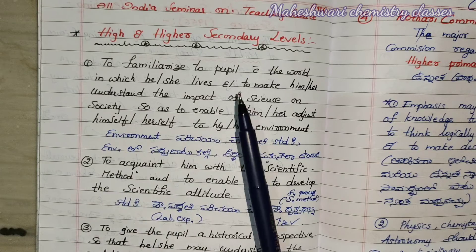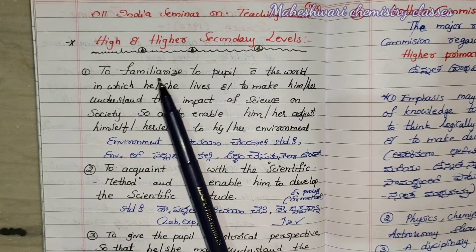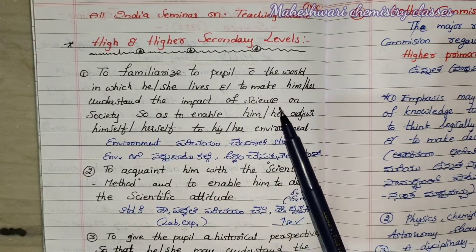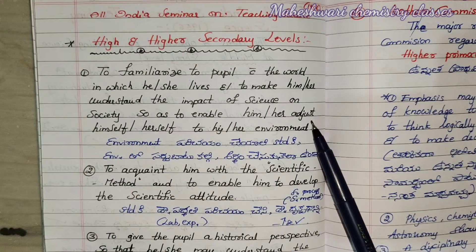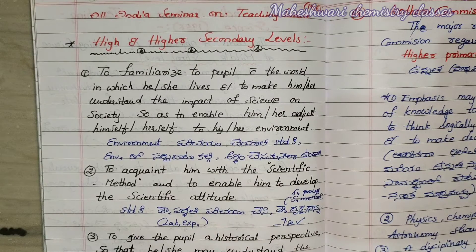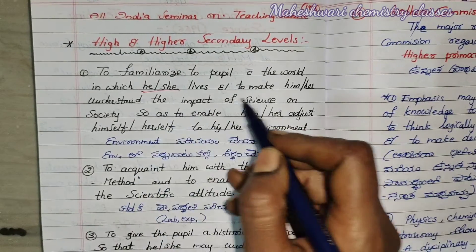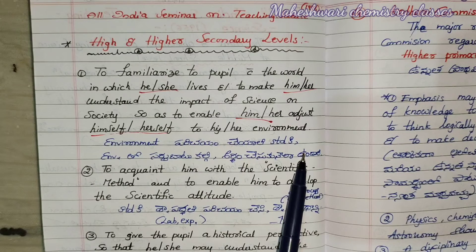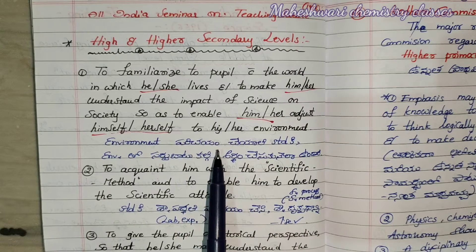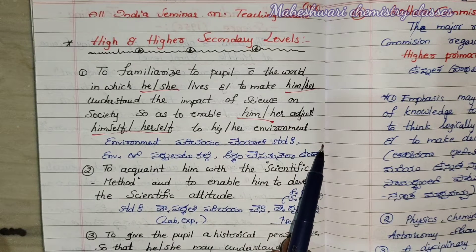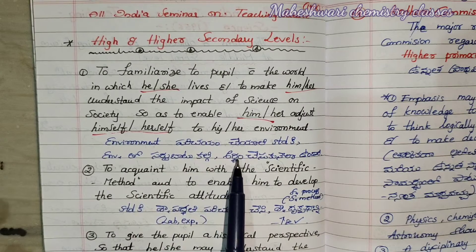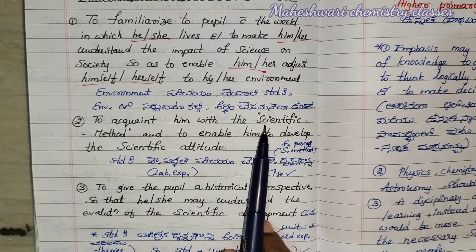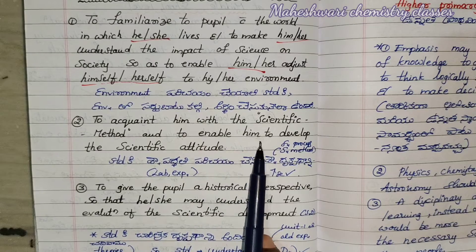All India Seminar on Teaching Science. First: to familiarize the pupil with the world in which he or she lives. Second: to make him or her understand the impact of science on society. Third: to enable him or her to adjust to his or her environment. The second point is to acquaint the pupil with the scientific method and to enable development of the scientific attitude.